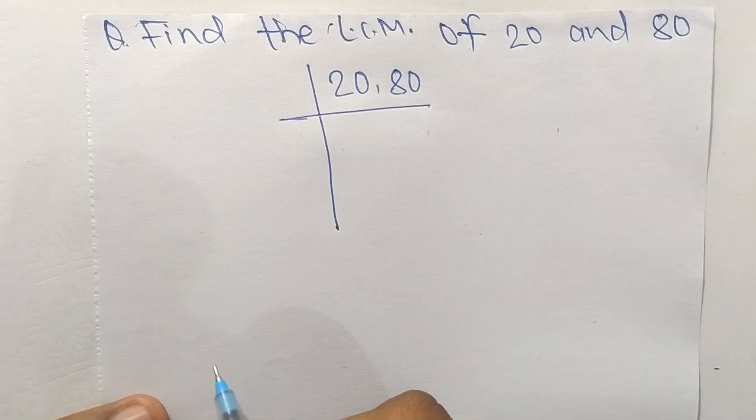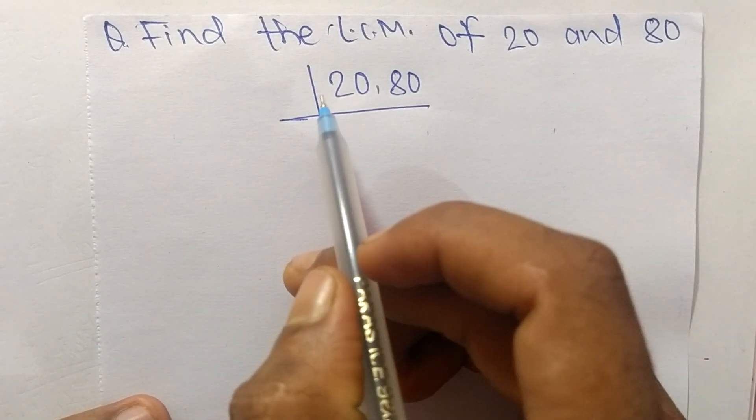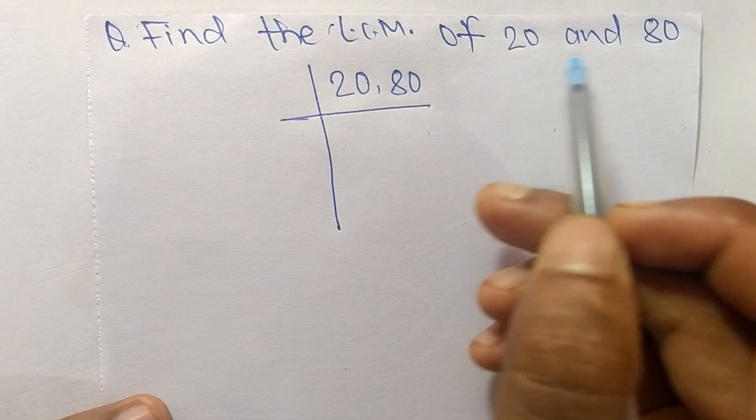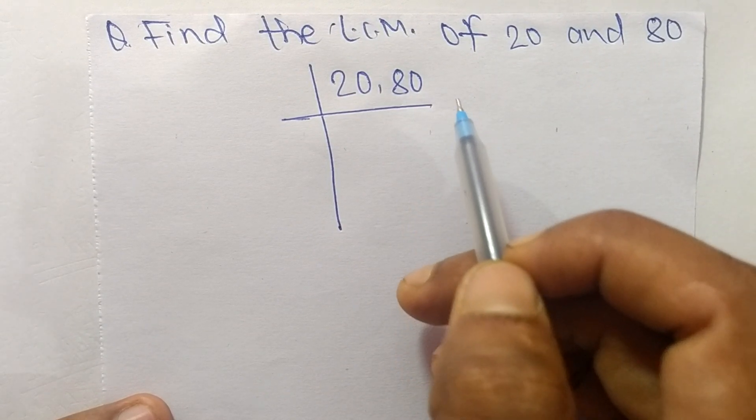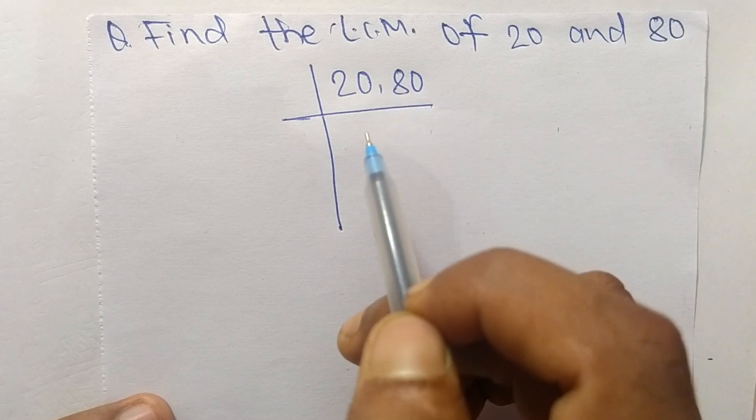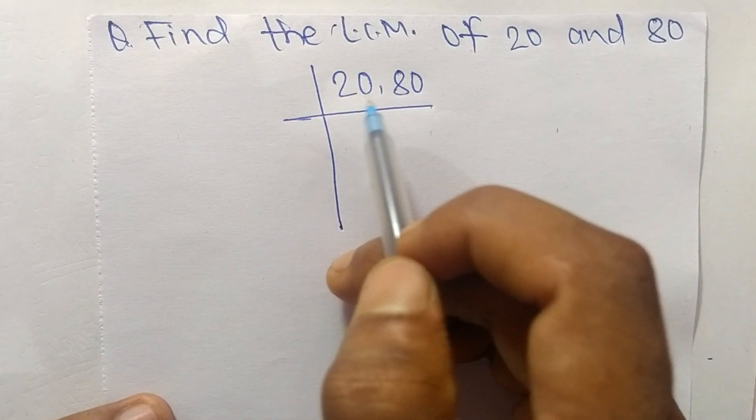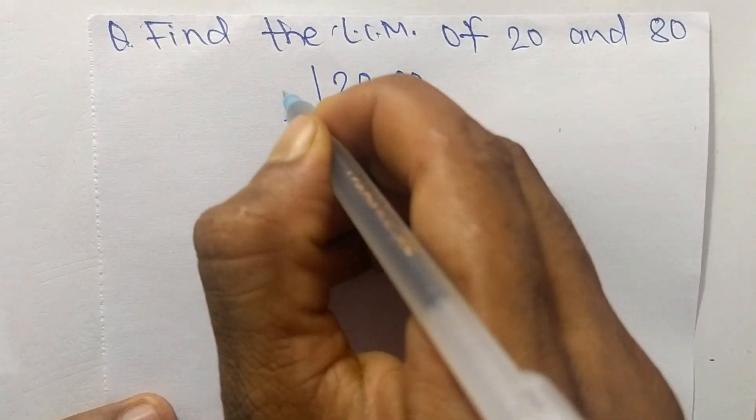Today in this video we shall learn to find the LCM of 20 and 80. To find LCM, first we have to choose the lowest number that can exactly divide 20 and 80. The number is 2.